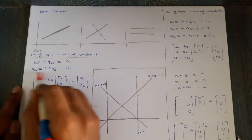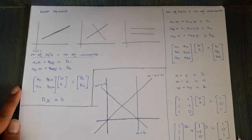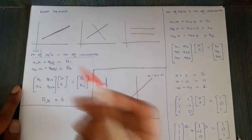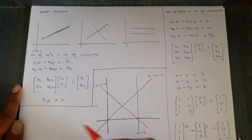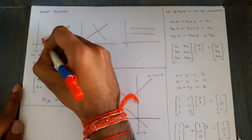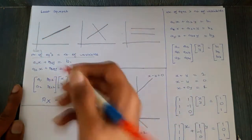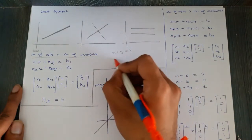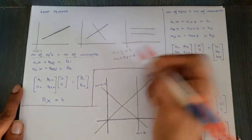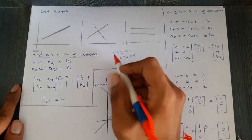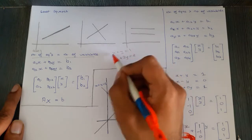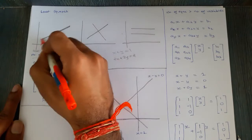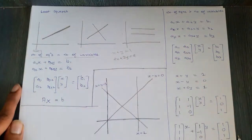For these two equations we can have three scenarios. Since we have two variables, these are lines in 2D. One case is that both lines lie on top of each other — for example, x + y = 1 and 2x + 2y = 2. Multiplying the first equation by 2 gives the second, so they are the same line.